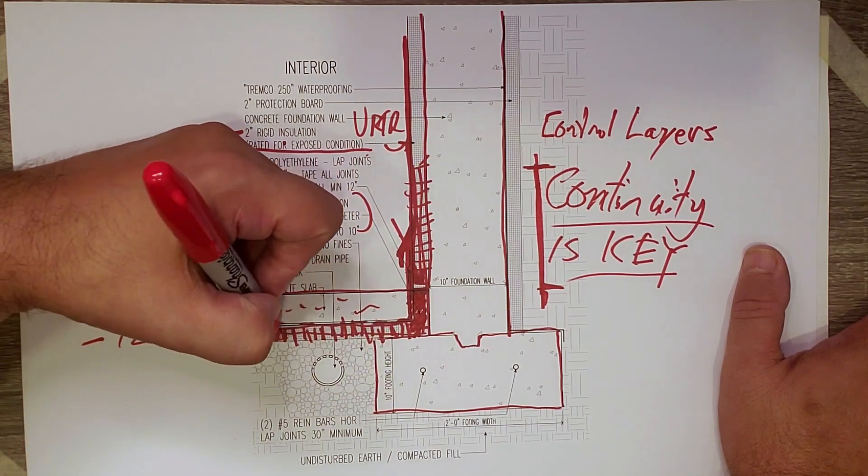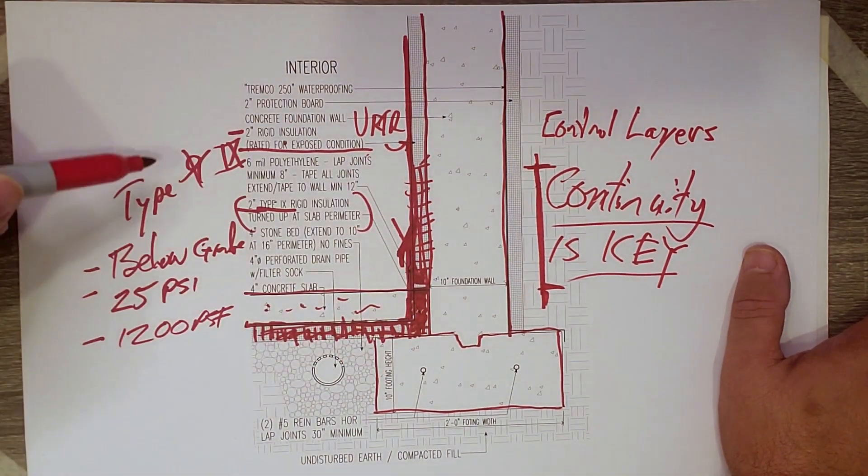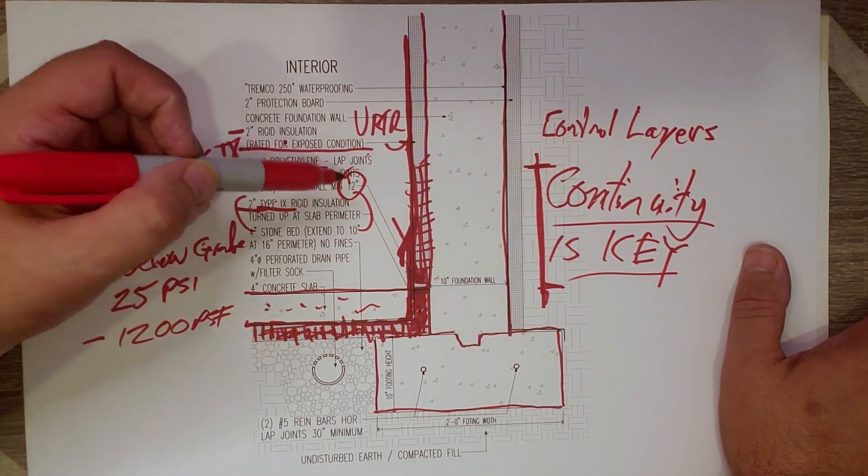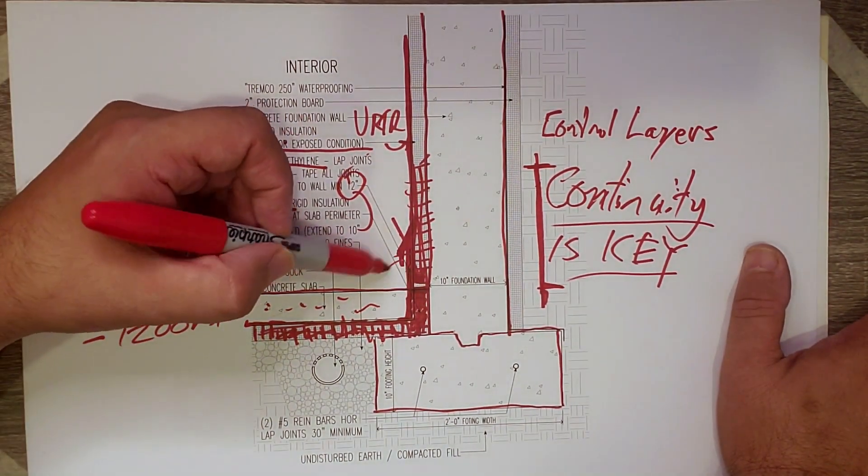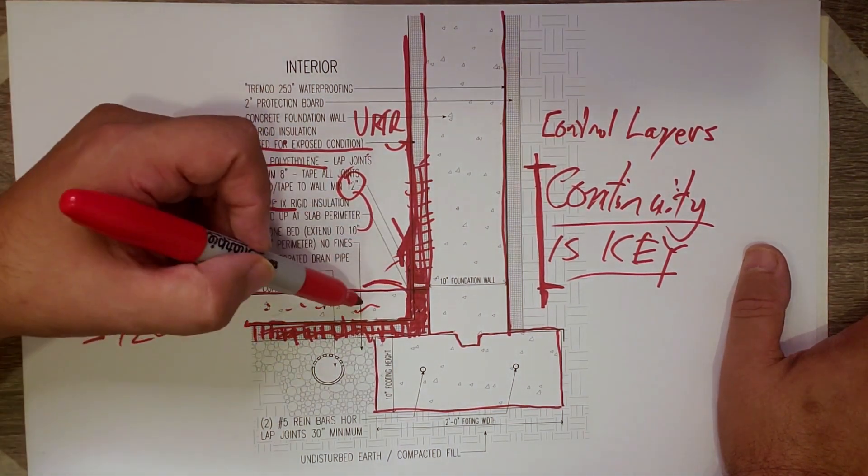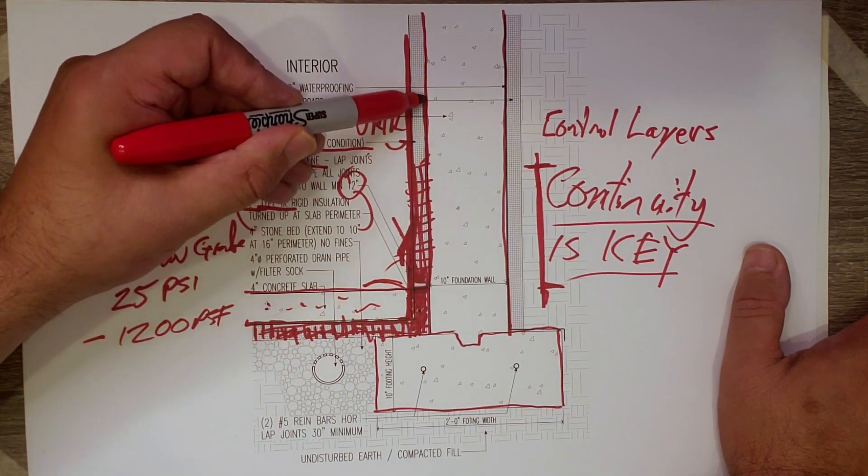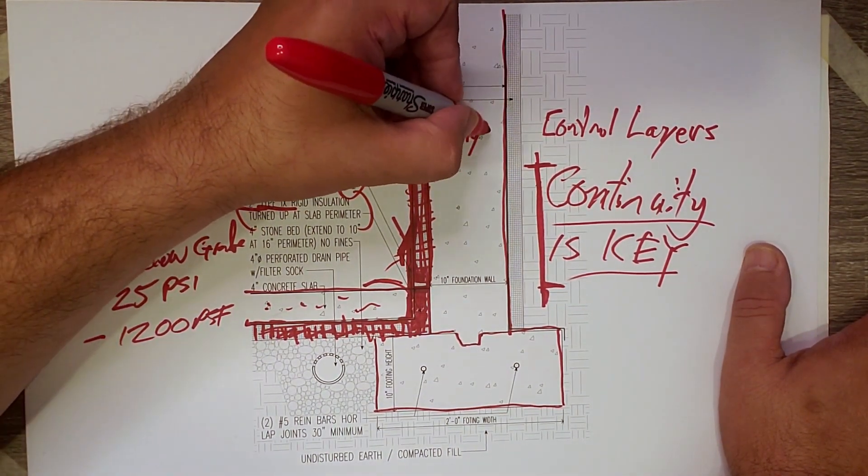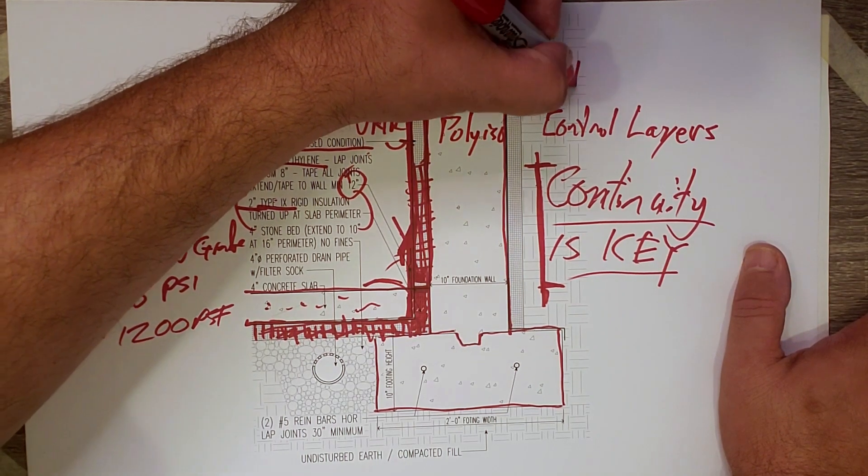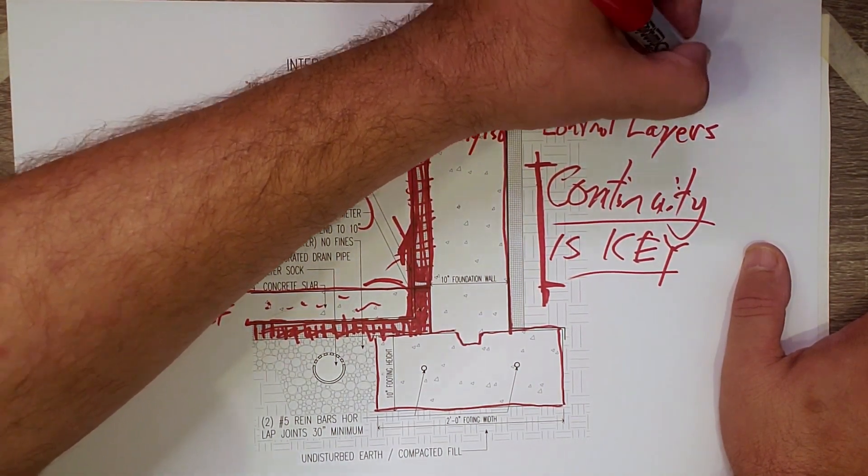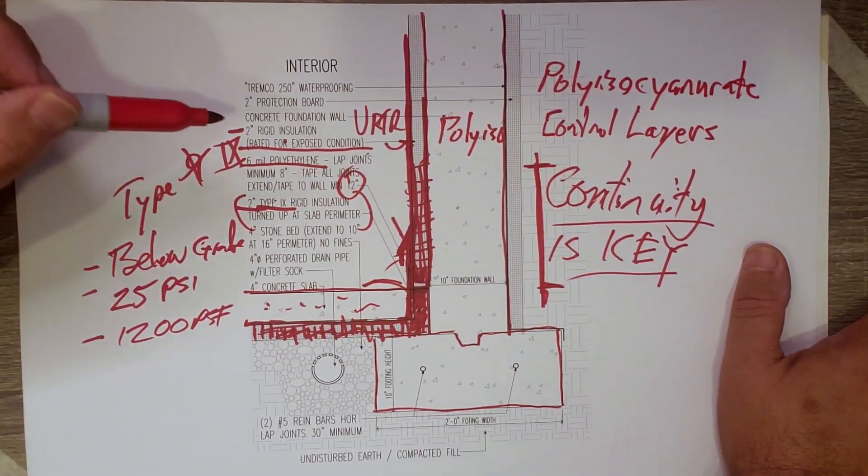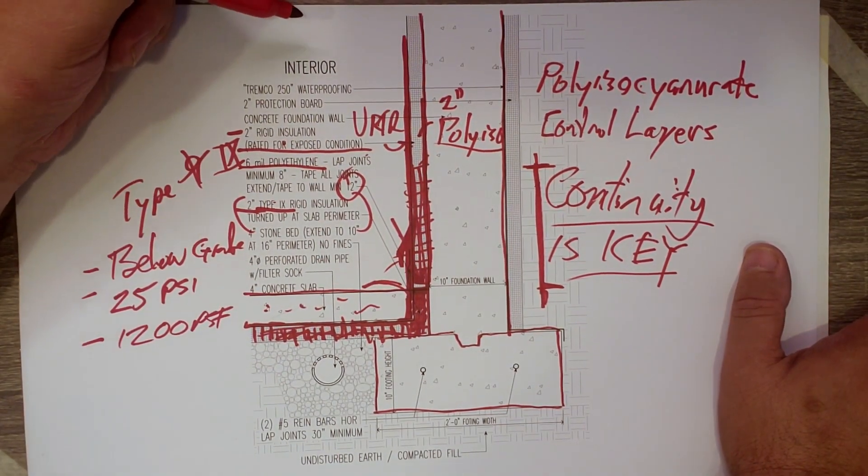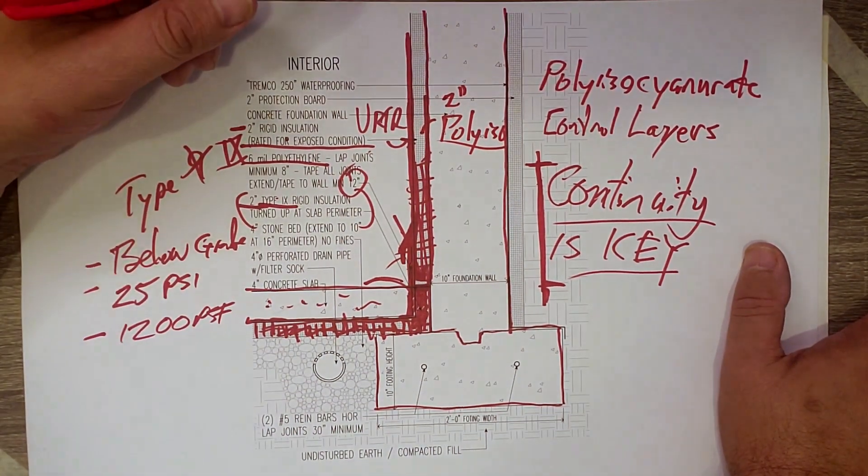So we run that two inches under the slab. We put, in this case, we did a six mil polyethylene and we brought it, we lap the joints under there, but we bring it up, extend it up the wall, a minimum of 12 inches, and they just taped it off as you saw. And then they'll peel that back and let it lay flop on the top of the slab. And then they'll come in and they'll install the other two inches of rigid insulation. And that's usually a poly iso. And poly iso is short for polyisocyanurate. How about that? So that two inches of poly iso goes in there and that'll run all the way up the wall to the top of the wall and then connect with some closed cell foam that'll go into the band joist area.